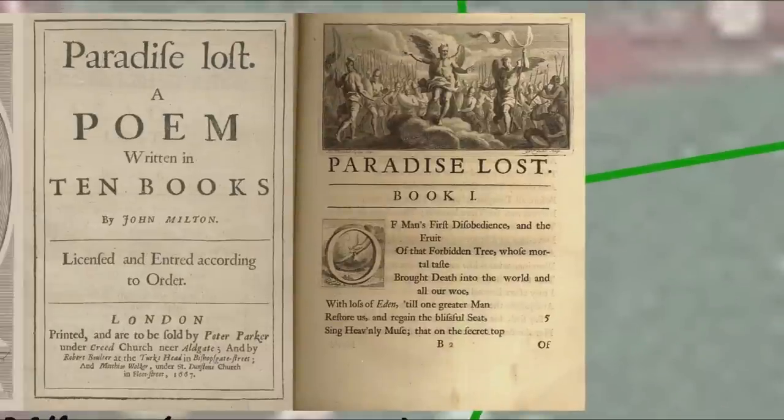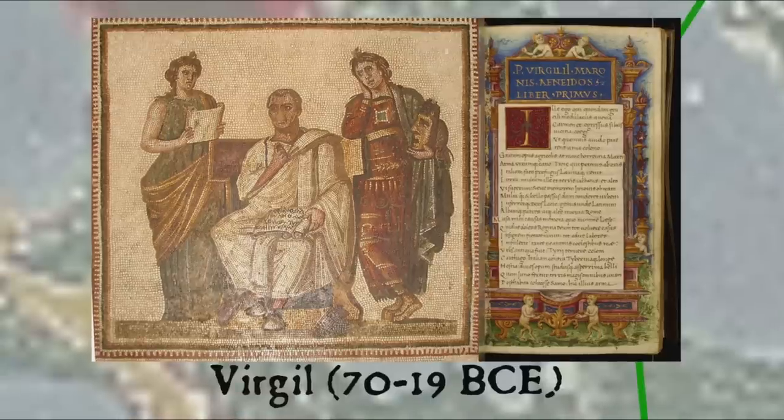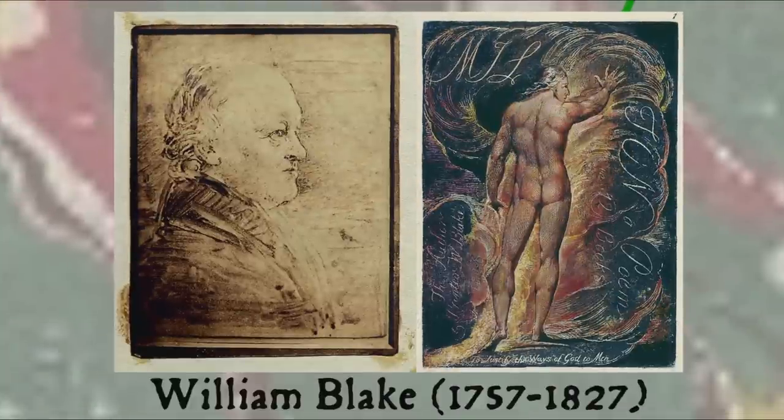Other poems we would today refer to as epics include the Old English heroic poem Beowulf and the Homer-inspired Roman Aeneid by Virgil, which in turn inspired John Milton's Christian epic Paradise Lost, which itself influenced William Blake's epic, Milton, a poem in two books.